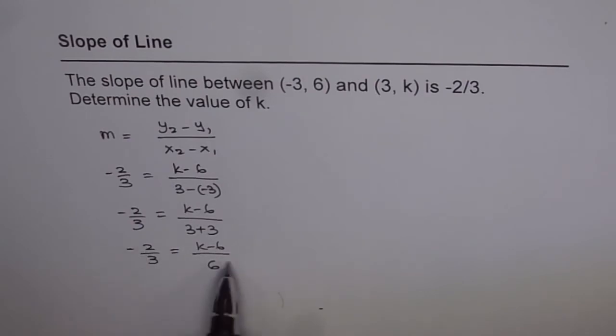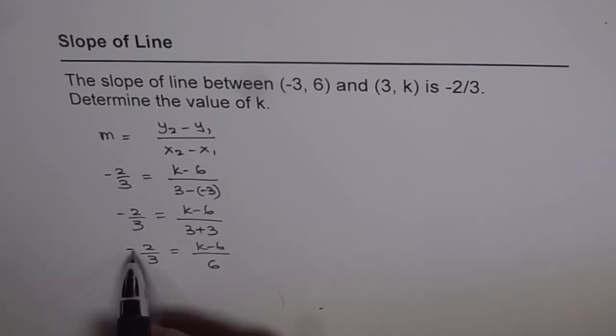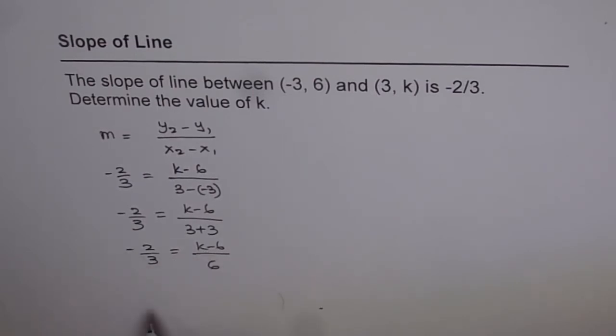Or you can say that multiply both sides by 6. So either way, what we will do is we will multiply by 6 on this side and 3 on the other side. That is one thing.